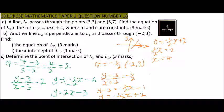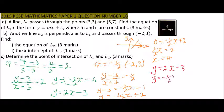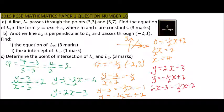Part C: determine the point of intersection of L1 and L2. The point of intersection is where the two lines meet. The equation of L1 is y = 2x - 3 and the equation of L2 is y = -½x + 2. At the point of intersection the x and y values are the same, so we equate: 2x - 3 = -½x + 2.